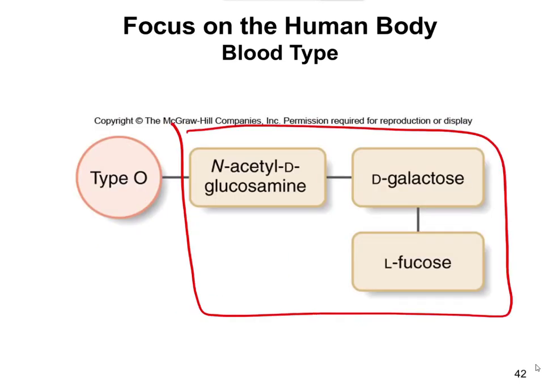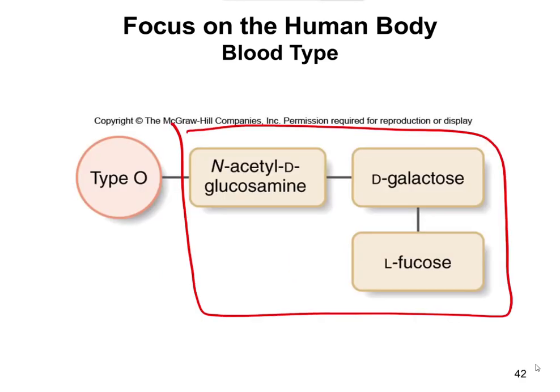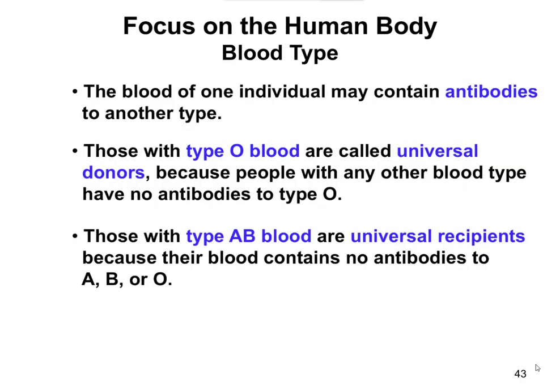If you're type AB, you have a mixture of both sugars. So if you're type A, you only have the top one. If you're type B, you only have the bottom one. If you're AB, you have both. And if you're type O, you have neither.